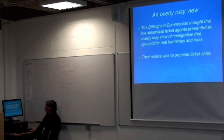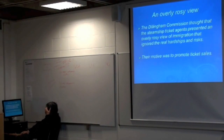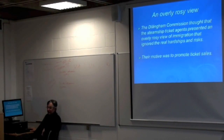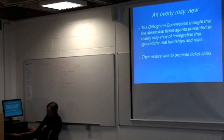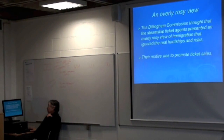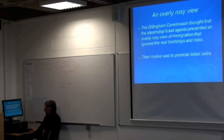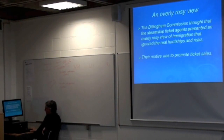The Dillingham Commission identified the main causes of European immigration. There were two: one was called the Advice and Support of Friends and Kin, which really turns into the social network theory of migration; and the other was the propaganda conducted by steamship ticket agencies, which is close to what is meant by the migration industry. The Commission thought steamship ticket agents presented an overly rosy view of immigration that ignored the real hardships and risks, their motive being to promote ticket sales. They produced glossy brochures and advertising to promote the idea that immigration to the United States was going to offer the immigrant a really nice future.